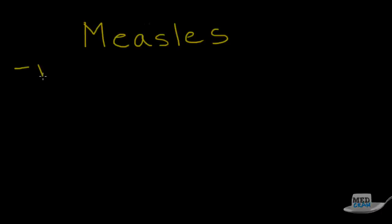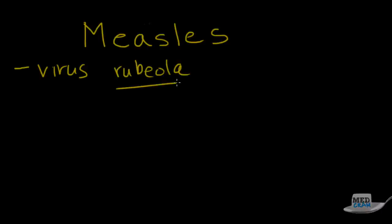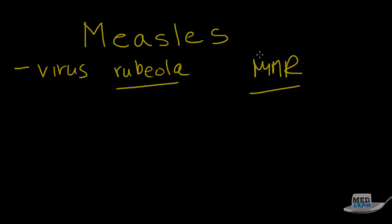First thing you should know is that it's a virus — specifically, it's the rubeola virus. You may remember the MMR vaccine: measles, mumps, rubella. Rubella is German measles; it's a milder type of disease. This is the first M in measles, mumps, rubella. And it's the rubeola virus.